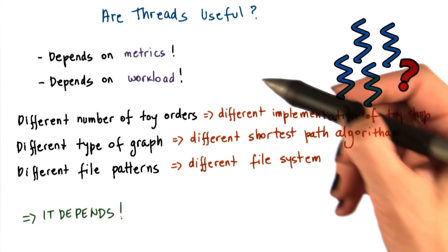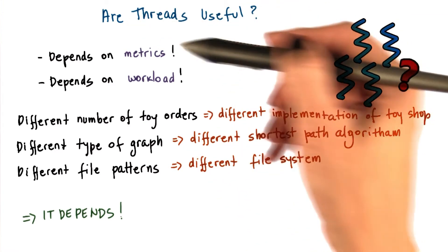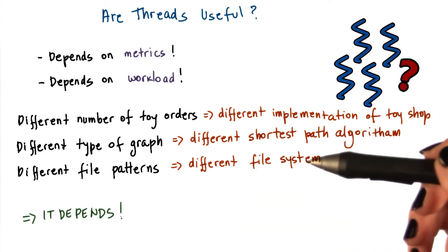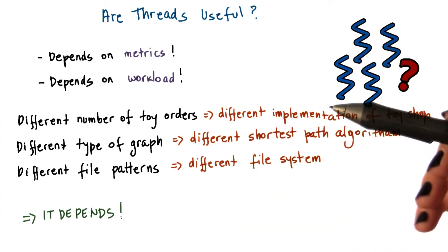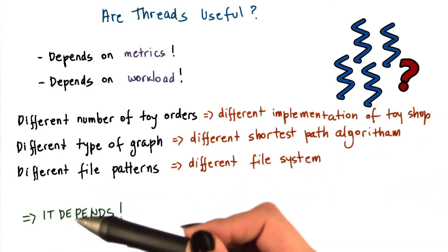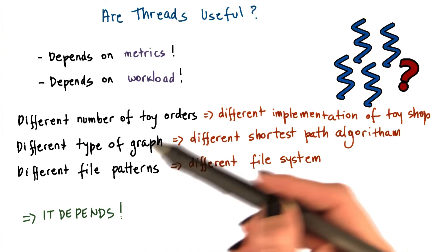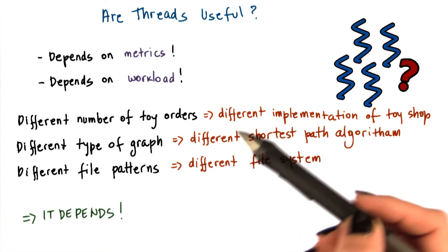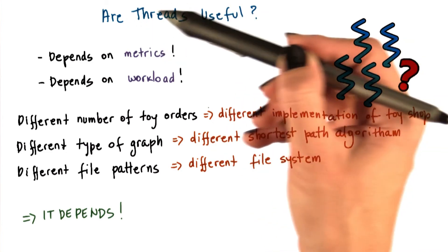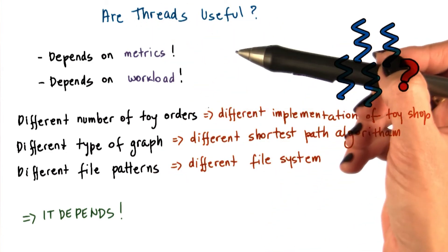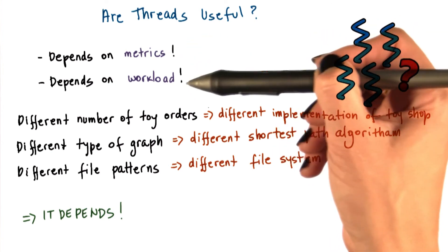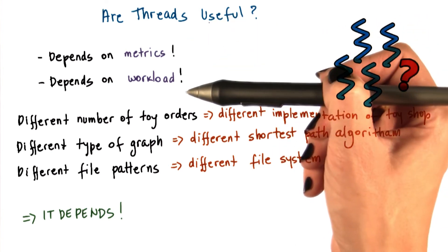The point of looking at all of these is that across the board, both for the first question as well as in these other cases, the answer of whether something is better than an alternative implementation or algorithm is pretty much always it depends, depending on the file pattern, depending on the graph, depending on the number of toy orders. So similarly, the answer to are threads useful isn't really going to be a straightforward yes or no. It's really going to depend on the context in which we're trying to answer this question.